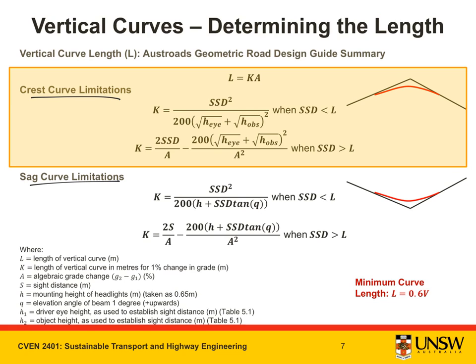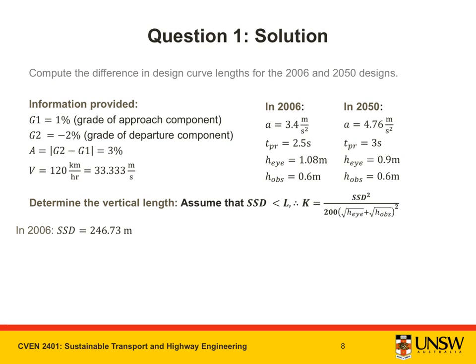However, we are presented with two different equations. Which one should we use? Well, we don't actually know which one to use because they apply in two scenarios. Equation one applies when SSD is less than L, and equation two applies when SSD is greater than L. Now, because we don't know what L is, this definition here is actually unhelpful for us. We don't know whether SSD is greater than or equal to L or less than L. Instead, we're going to have to arbitrarily pick one equation and then check our assumption. We should also note that there is a bare minimum curve length, and that is L is equal to 0.6V. Let's go ahead and just choose one of the equations.